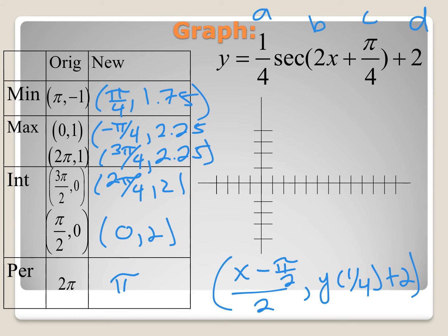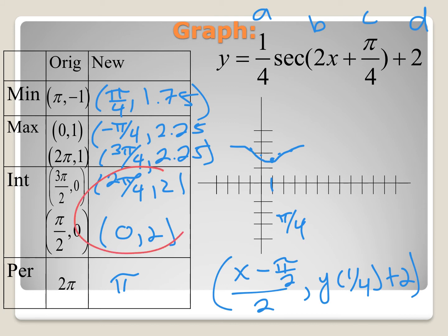Going ahead and sketching this out — to make tick marks easier, each one goes by pi over 4. Plotting pi over 4 at 1.75, negative pi over 4 at 2.25, 3 pi over 4 at 2.25, 2 pi over 4 at 2, and 0 at 2. Here's a quick sketch of our cosine. To translate it into the secant, we look specifically at our intercepts and draw asymptotes there. Then we sketch one cycle of the secant function in between, coming up and touching the maximum, with partial cycles at the edges approaching the asymptotes.